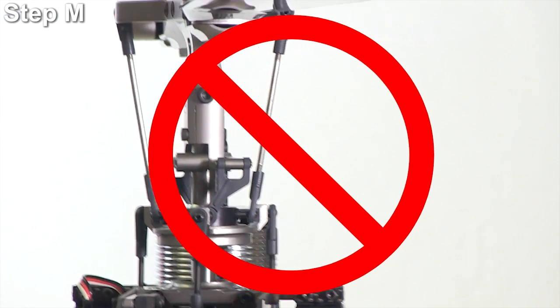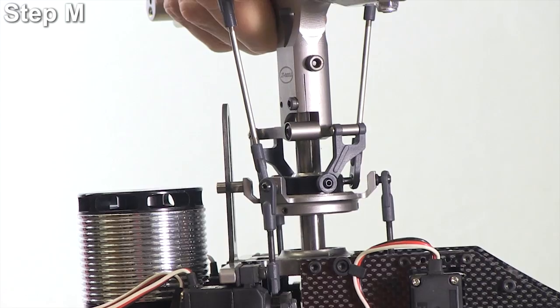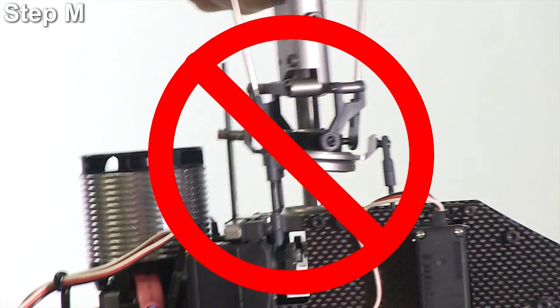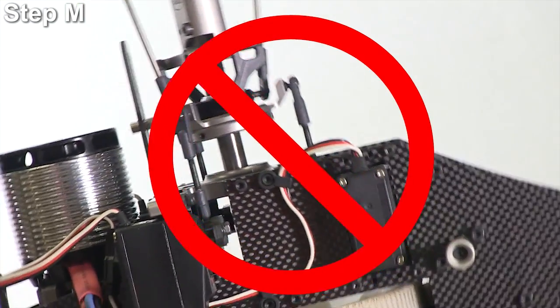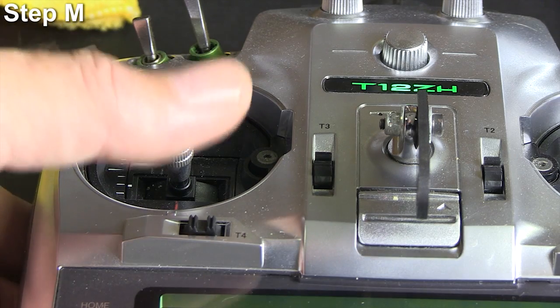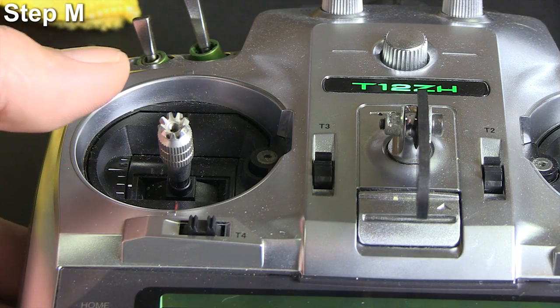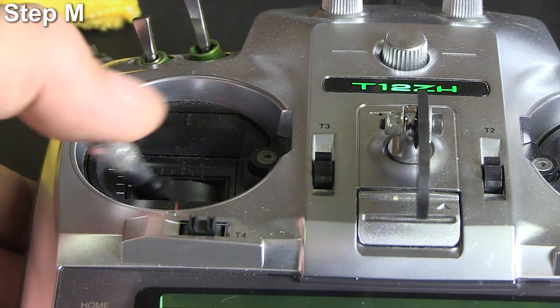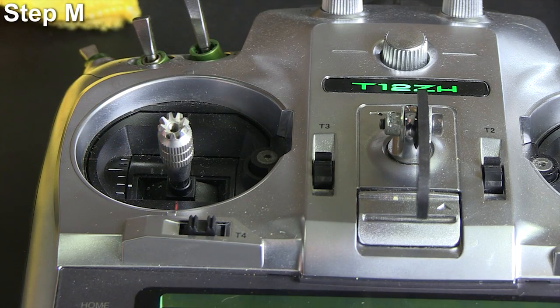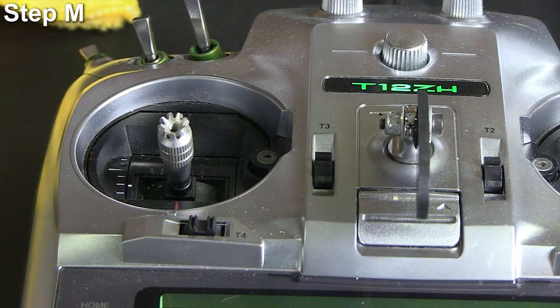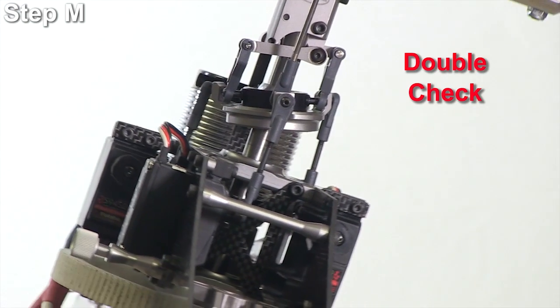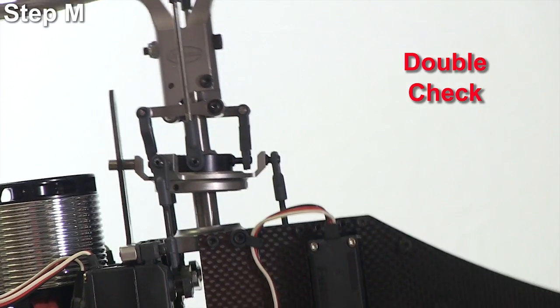If it behaves like this, we need to flick the rudder stick. You've only got four choices. One of them is going to be right. So flick it, check it again until you get it right, and then double check it. This is very important.